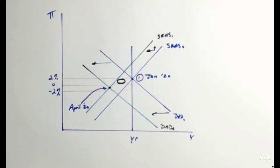The model is fairly good at explaining what happened. I've drawn this model out beforehand very carefully, and the precision I wanted was around inflation. On the left-hand side on the inflation axis, I have 2%, 0%, and minus 2% with some fine lines. In January of 2020, we started out at equilibrium point 1. We have our standard dynamic demand curve, full employment, and a short-run aggregate supply curve — we're in equilibrium.